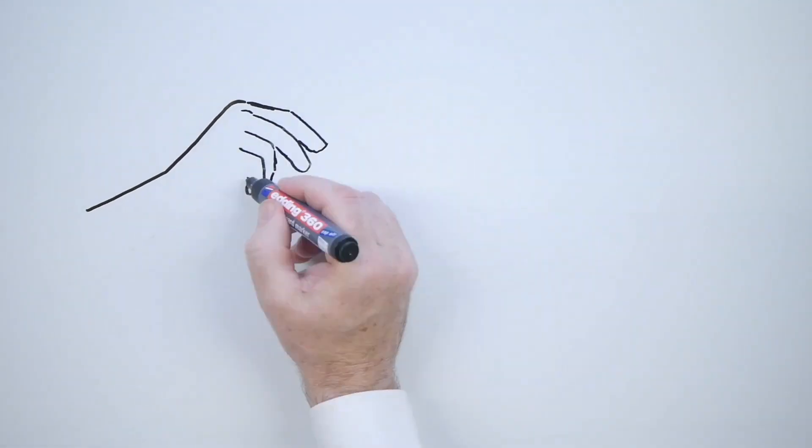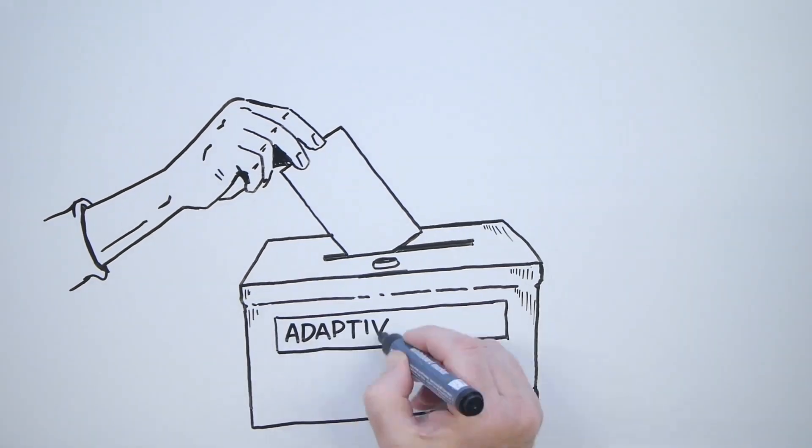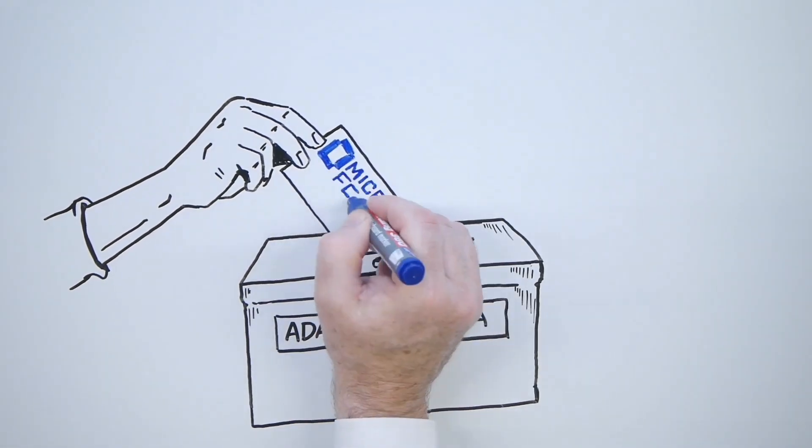So check out the Adaptive Identity Governance and Administration solution from Micro Focus. On balance, it sure gets my vote.